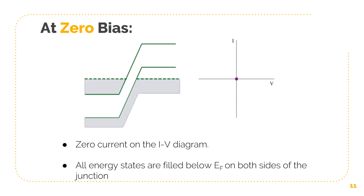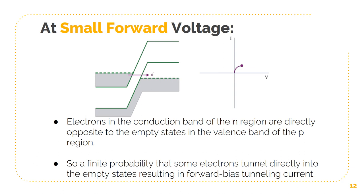If we assume for simplicity that we are near zero Kelvin, then all energy states are filled below EF on both sides of the junction. At small forward voltage, electrons in the conduction band of the N region are directly opposite to empty states in the valence band of the P region. There is a finite probability that some of these electrons will tunnel directly into empty states, producing a forward bias tunneling current as shown.